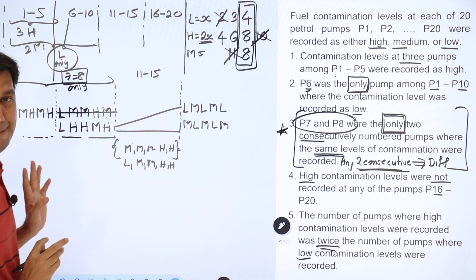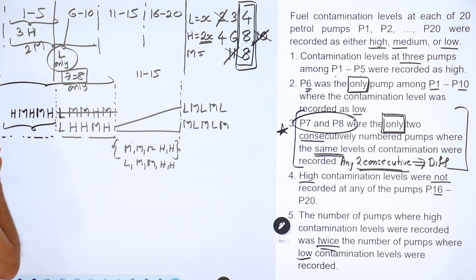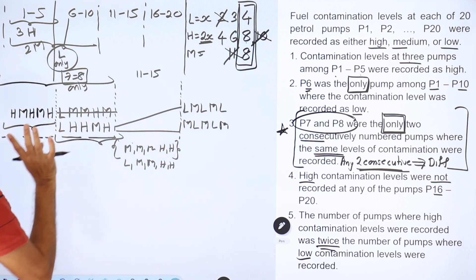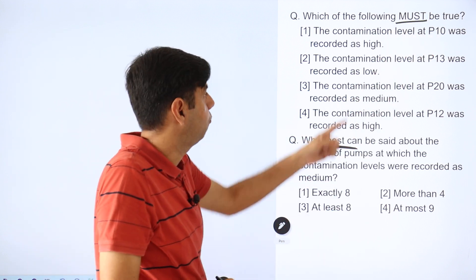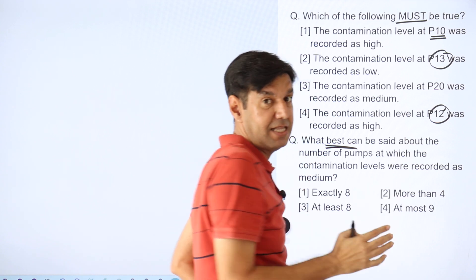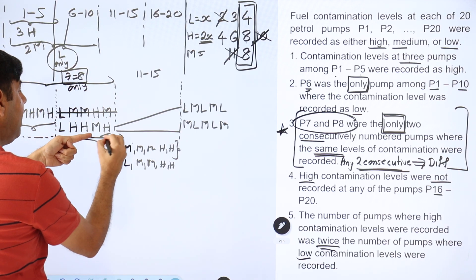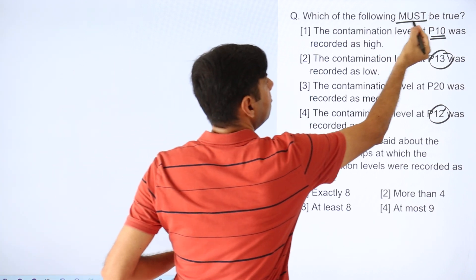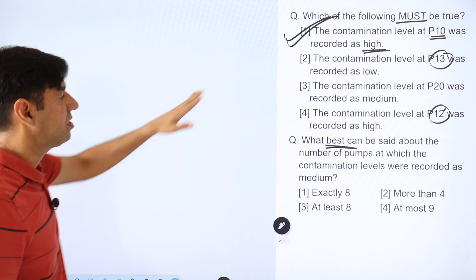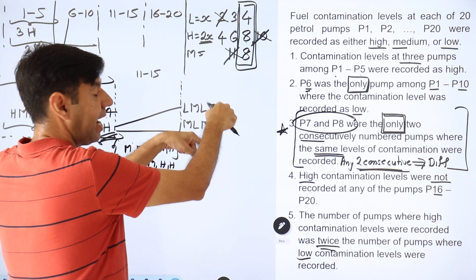Now it's the right time to move to the questions. Pumps 1 to 5 are very clear: H M H M H. Pumps 6 to 10 are also clear with 3 H's needed here — P6=L, then the pattern continues. The first question: which of the following must be true? Looking at the options, P10 is easily determined. P10 has to be H. So the answer 'contamination at P10 was high' is true. You don't need to waste more time — P13, P12 are in the unknown range of 11 to 15, and P20 could be M or L.